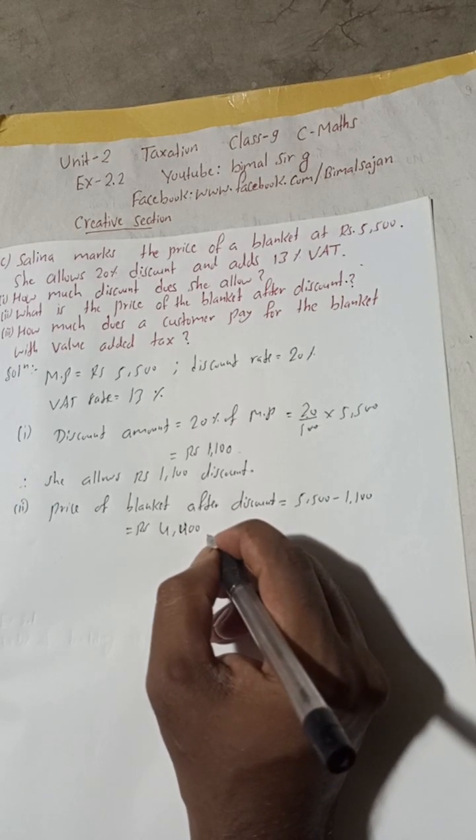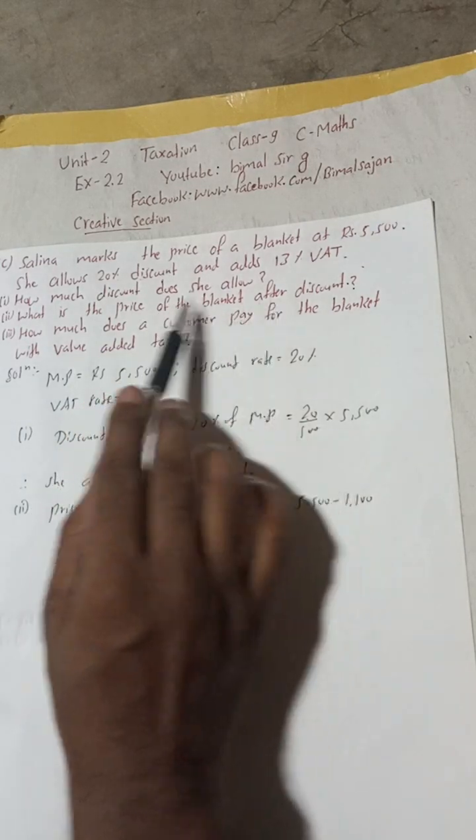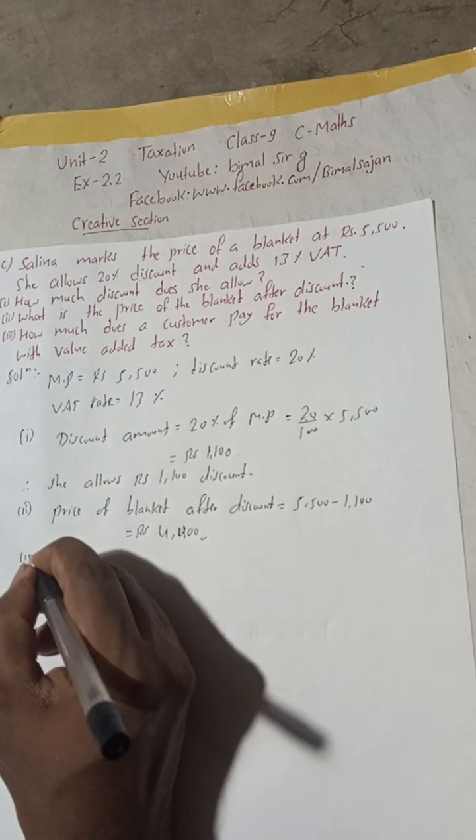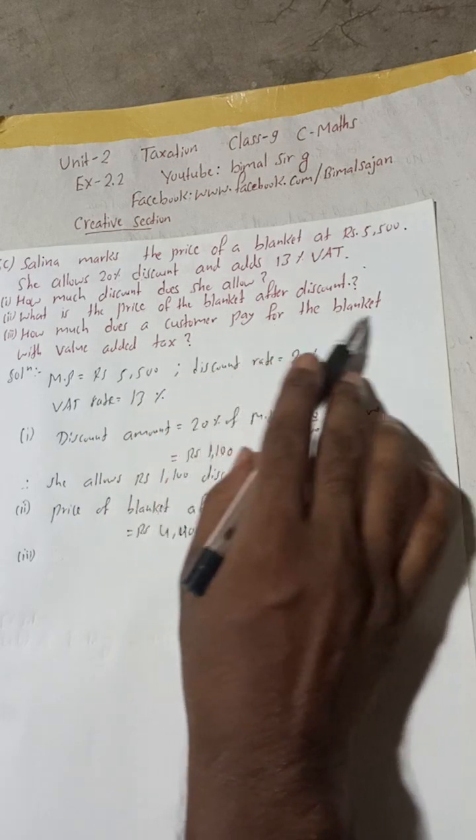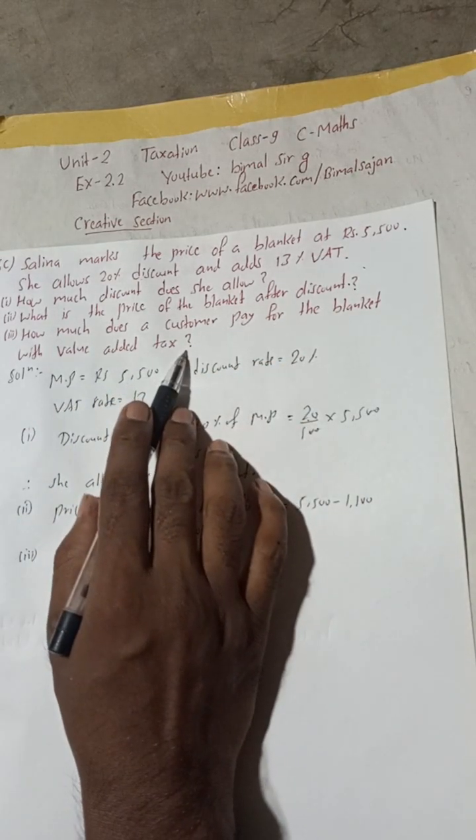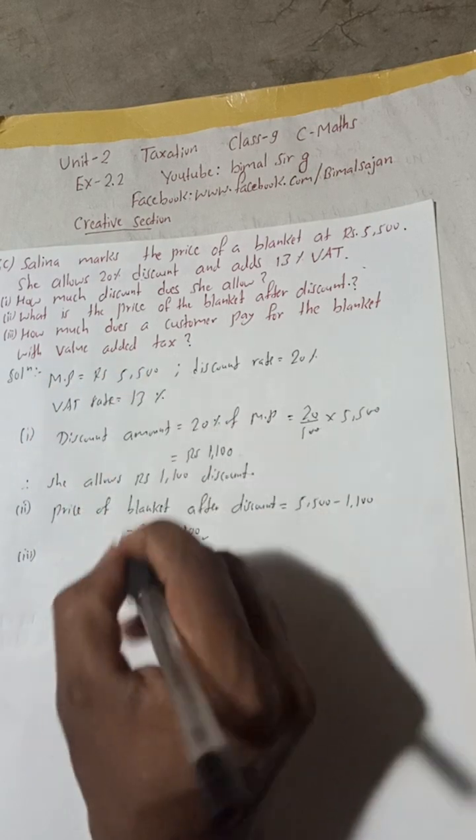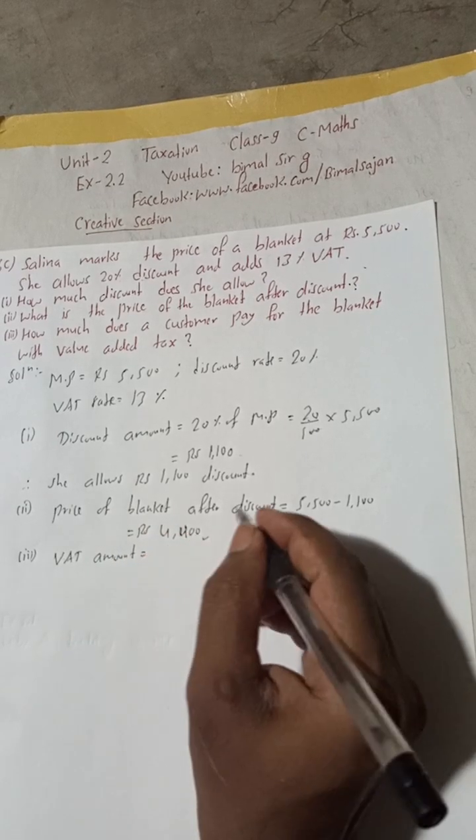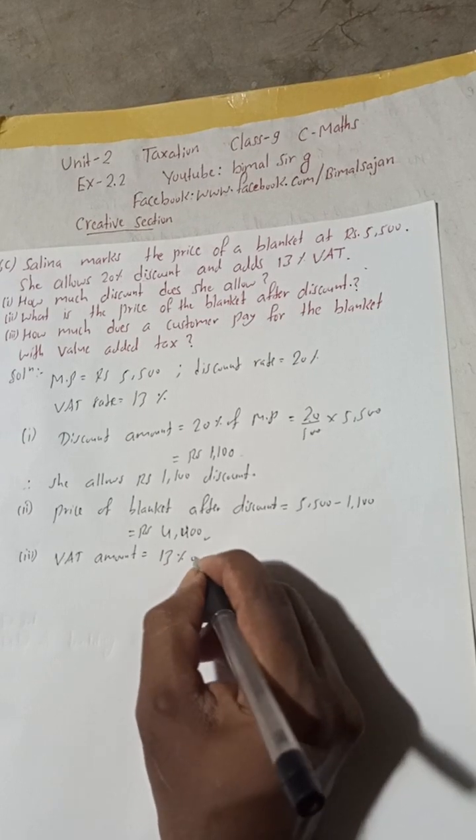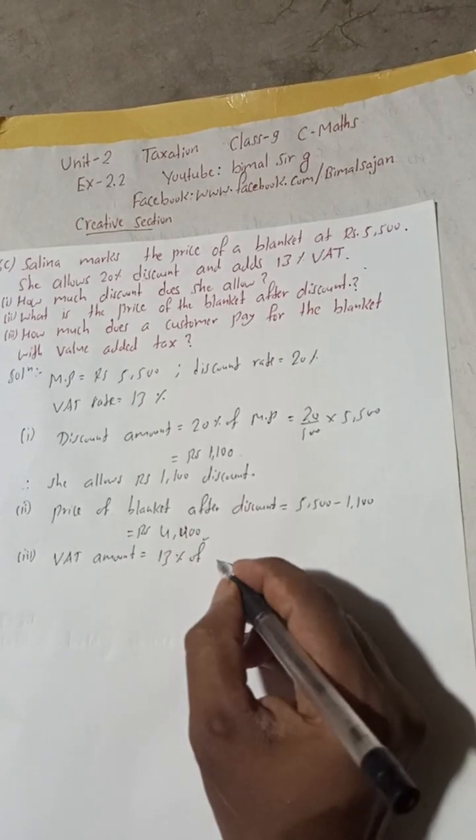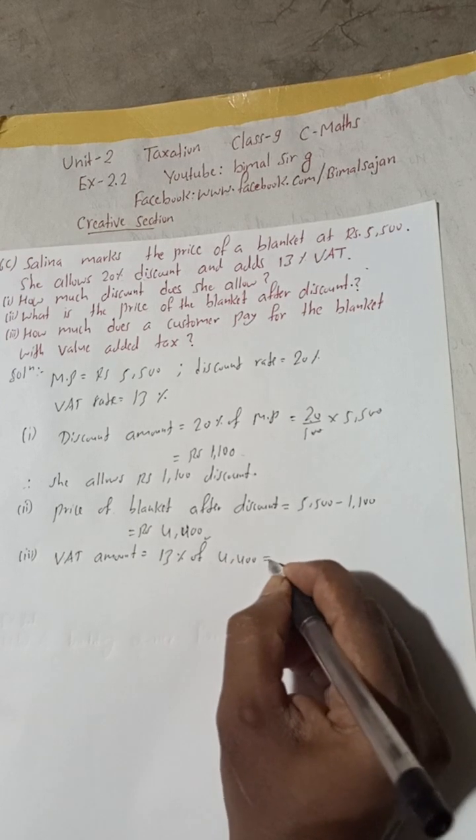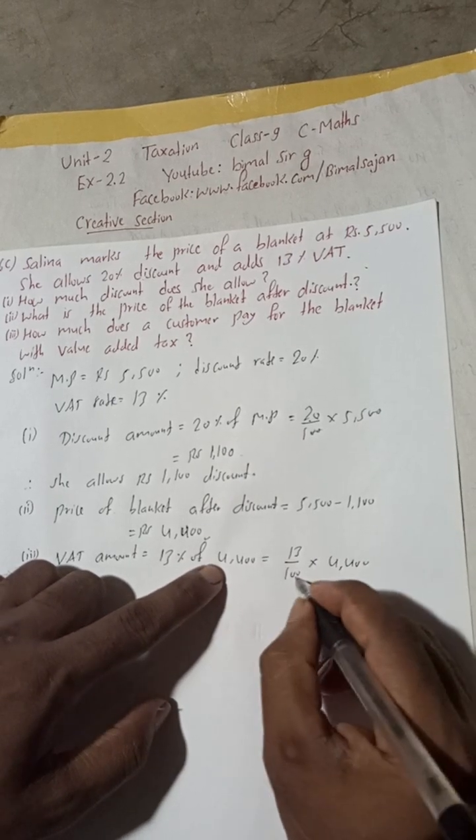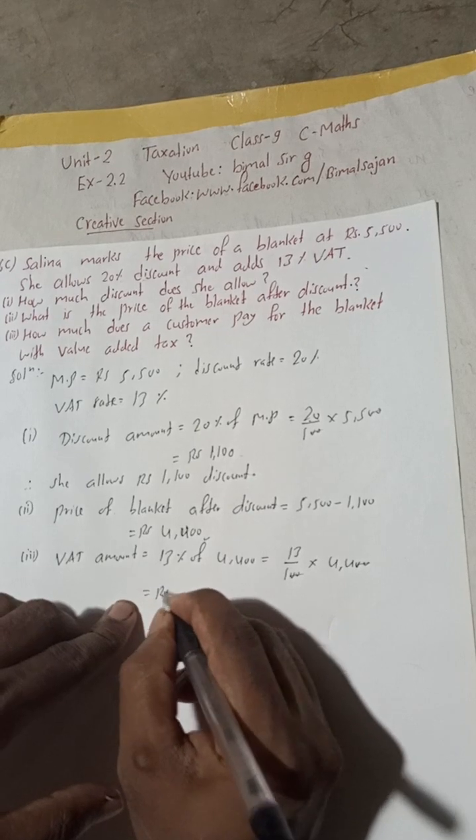Now third, number three: How much does the customer pay for the blanket with value added tax? So for this you have to first find value added tax, that is VAT. VAT amount. VAT amount is what? Rate of VAT 13%, rate of price of blanket after discount. We have to write, okay, so this is 4400. 13 percent means 13 divided by 100, of means into 4400. Two zero, two zero cancel. If you multiply 13 into 44 you will get here 572, Rs 572.